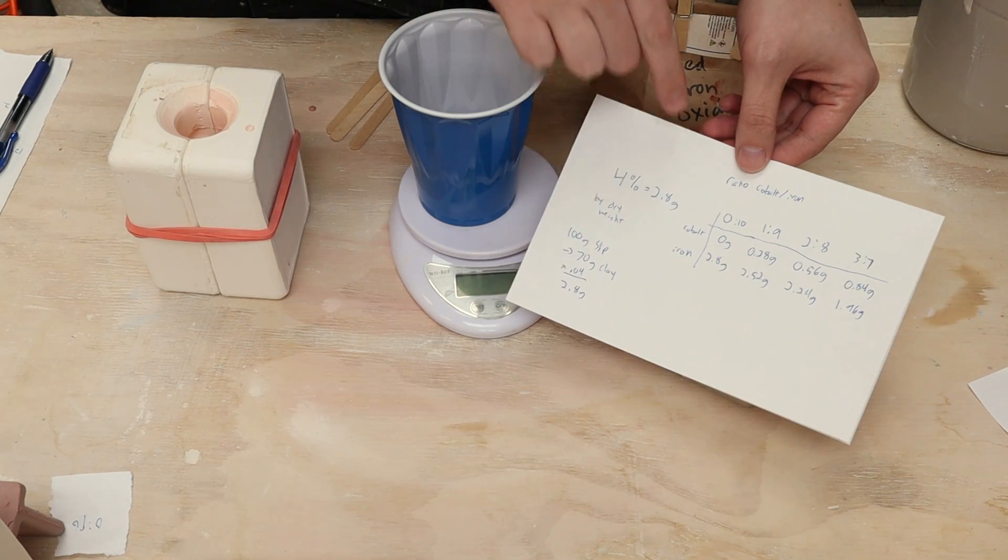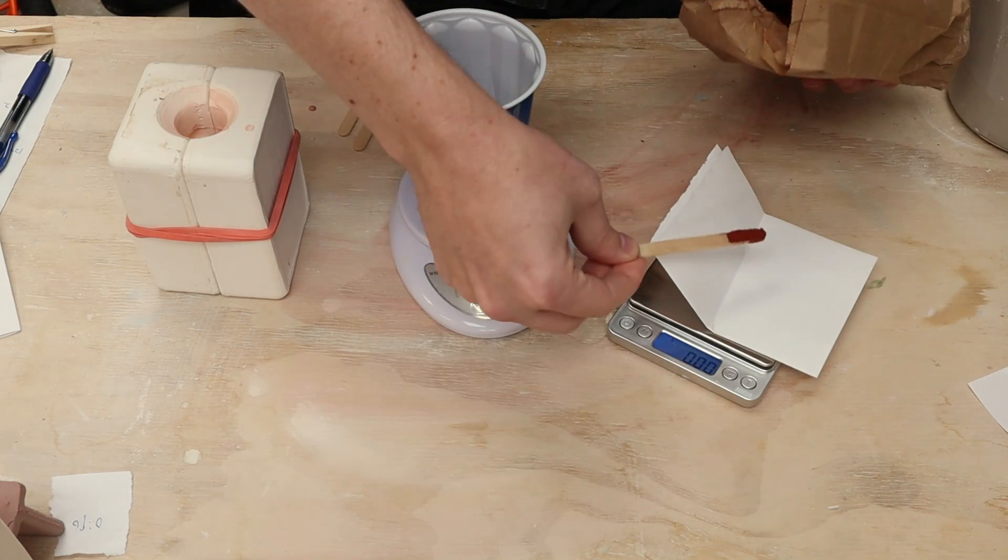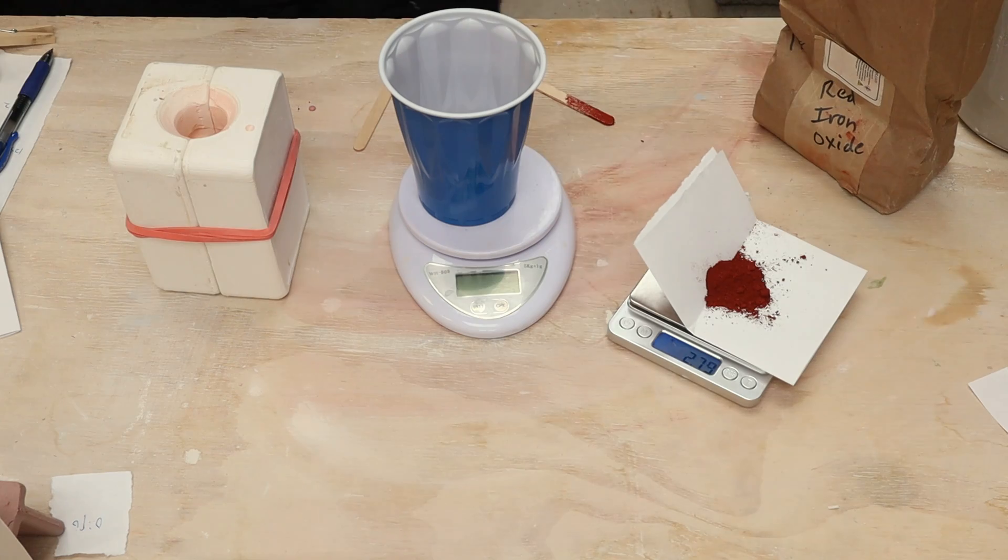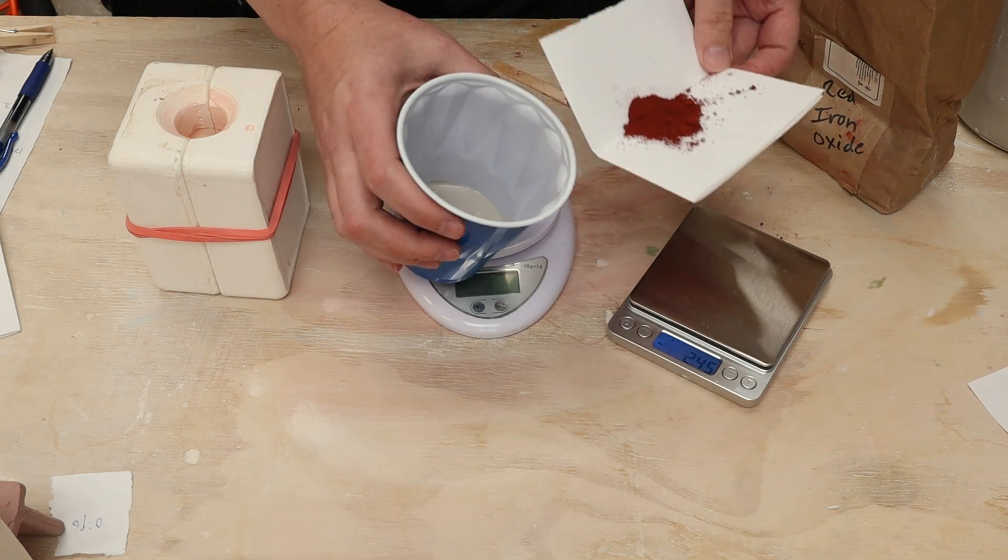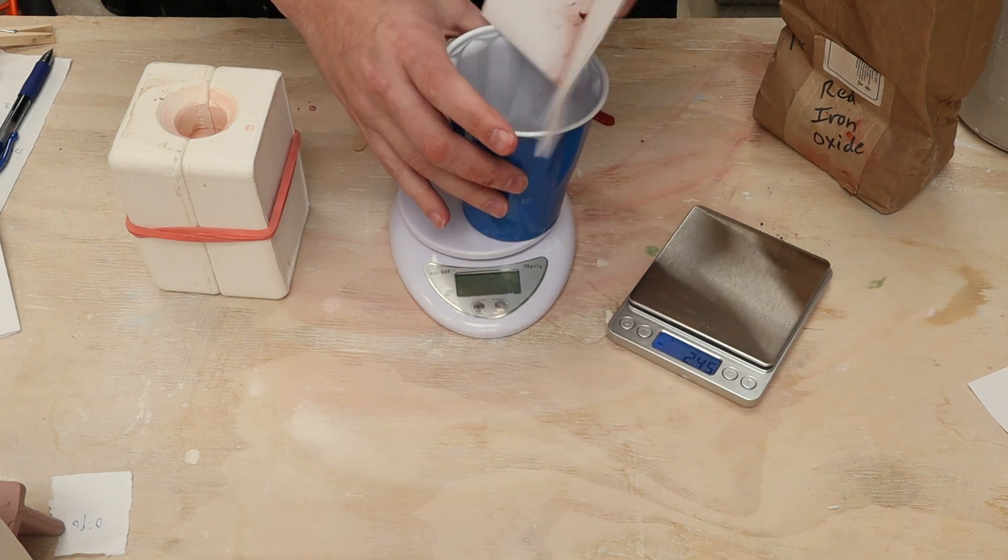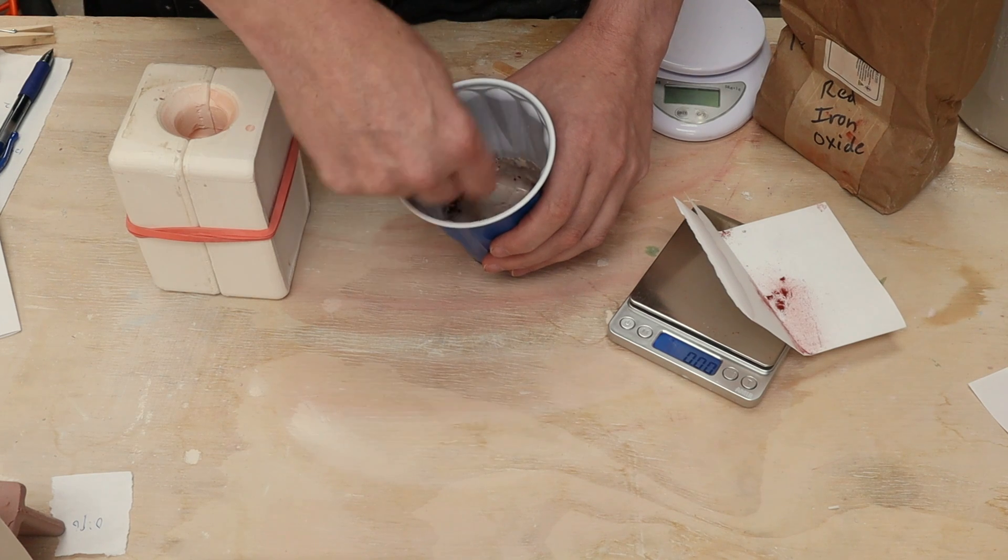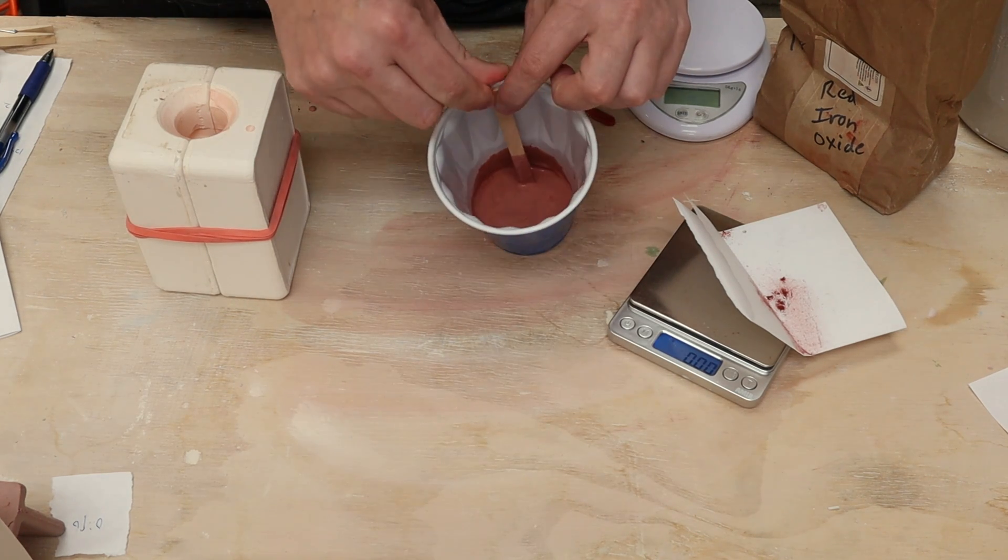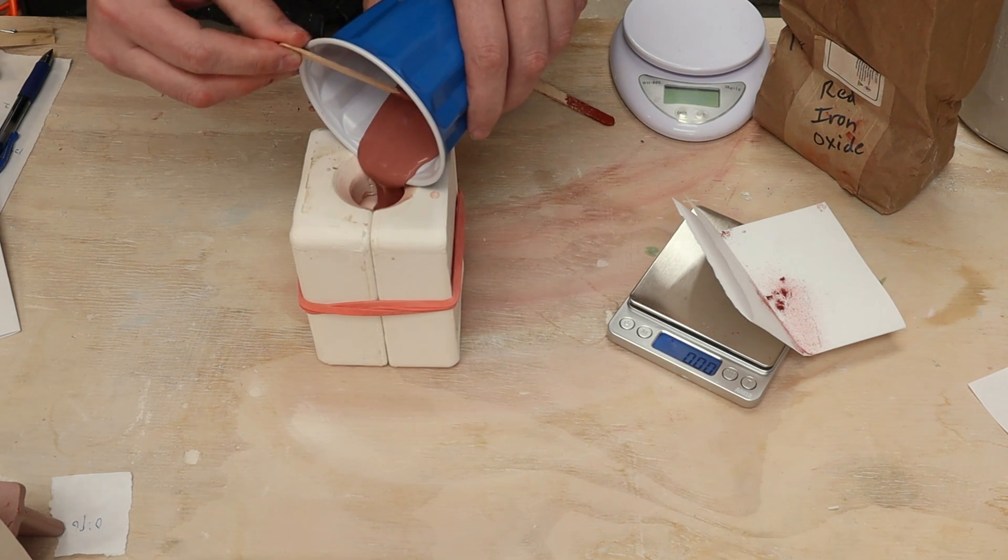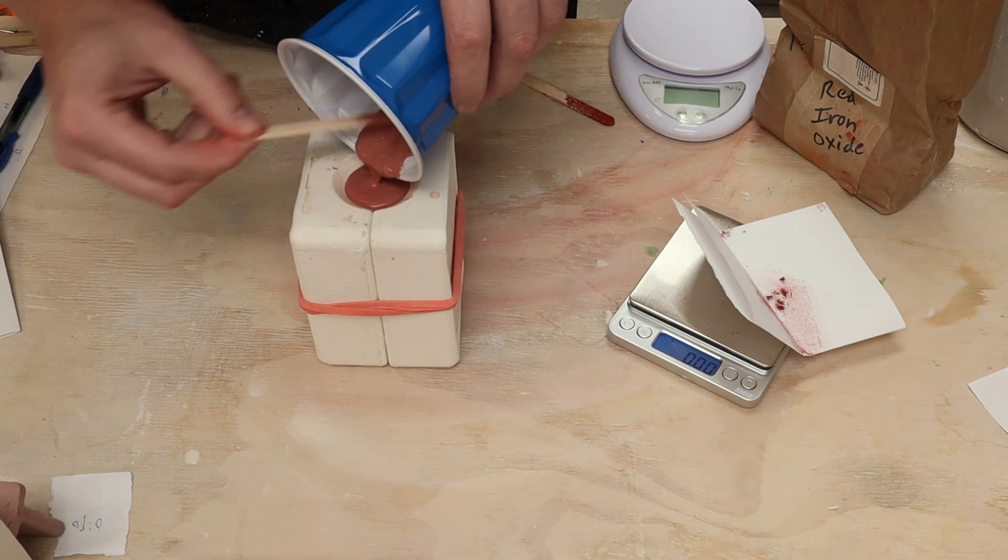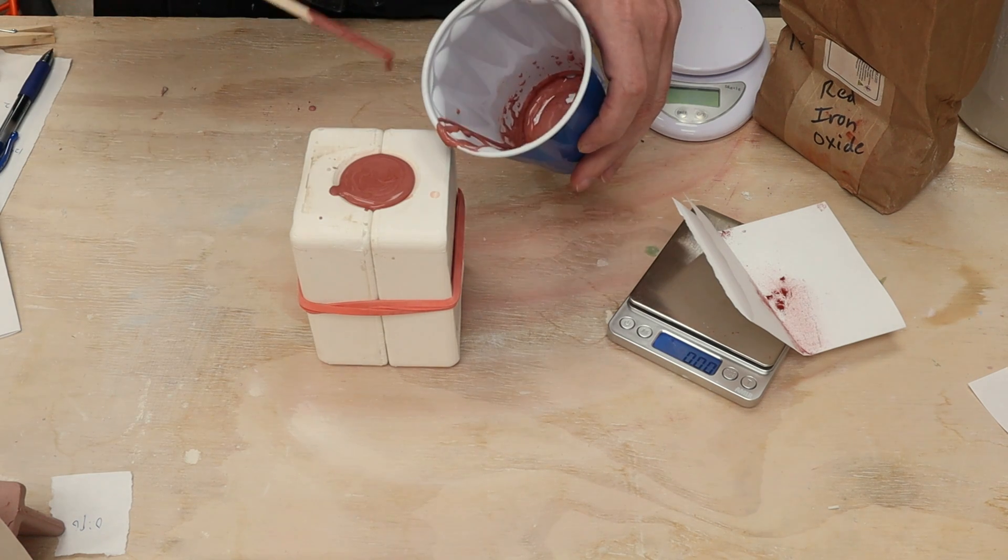Going back to my sheet, this one is just the iron oxide. I need 2.8 grams of that. 2.79, that's close enough. So that all goes into here. Let's go ahead and mix it all up. That looks pretty well mixed up to me. Here's the mold and all this slip should fit in just fine. Perfect, just a tiny bit left over.